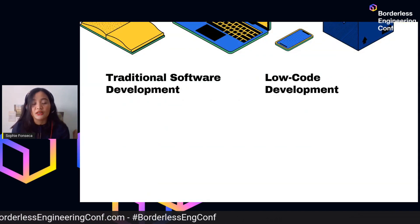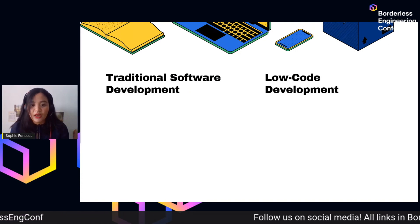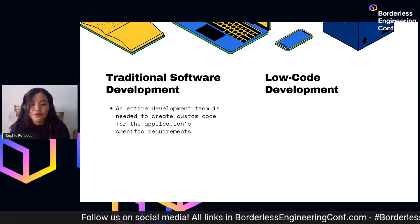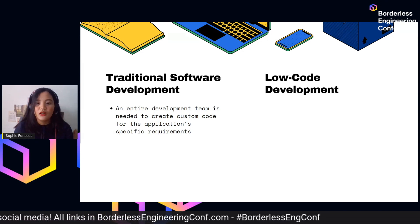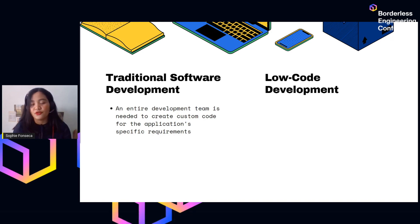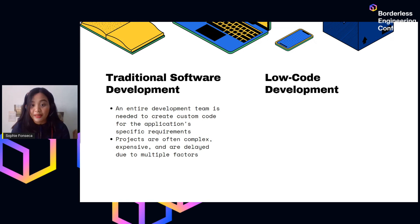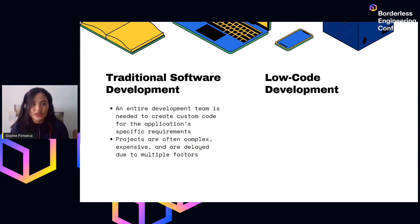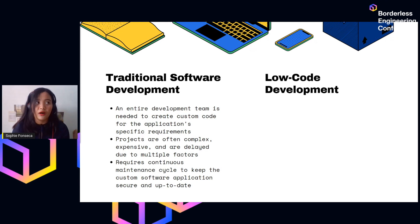To understand better, let's look at the differences between traditional software development and low-code development. Traditional coding involves an entire team that gathers specific requirements, develops a plan, and relays it to programmers to create custom code. Although the traditional approach is completely acceptable, these projects are often complex, expensive, and delayed due to factors such as coding errors or bugs, inaccurate estimations, testing challenges — especially if there's no dedicated QA — and infrastructure delays. Furthermore, traditional development requires a continuous maintenance cycle to keep the software secure and up-to-date.